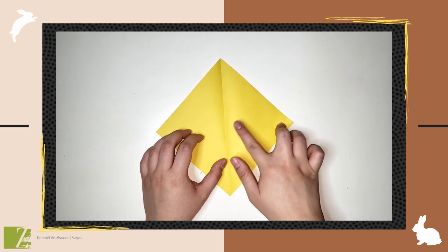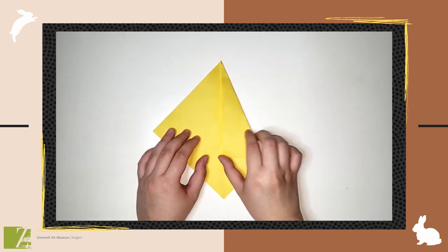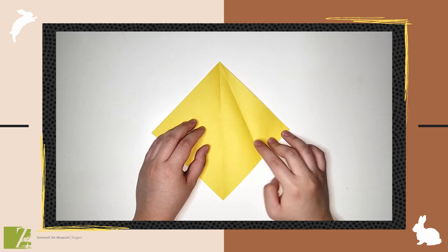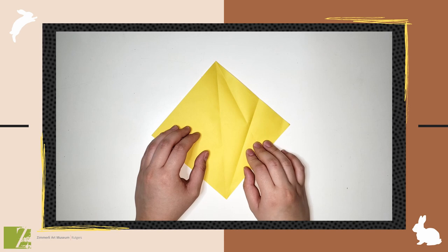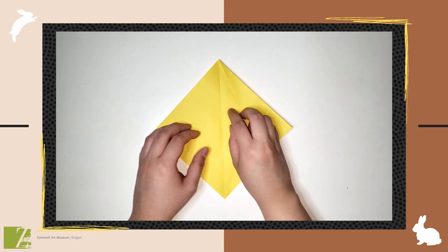Unfold and fold this outside edge to the middle. Unfold again and repeat the same step with this edge to the middle. Now that this side is okay, repeat and mirror the same steps but with the other side.